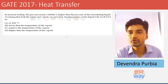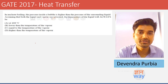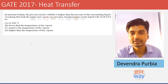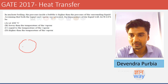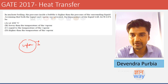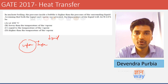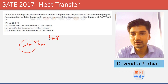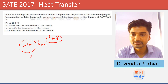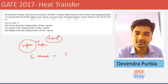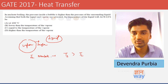The next question concerns nucleate boiling, where the pressure inside the bubble is higher than the surrounding liquid pressure. Assuming both liquid and vapor are saturated, what is the temperature condition of the liquid? Here we have a bubble with vapor inside, surrounded by bulk liquid. In nucleate boiling, the surface or vapor temperature is always slightly greater than the liquid temperature — this is the defining condition for nucleate boiling.